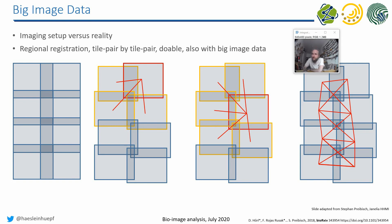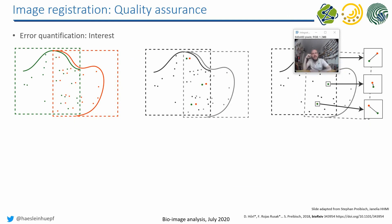At the end, you take all the transformations determined between the different tiles, equalize the error between them, and figure out how all tiles fit together in the best way. When all tiles are aligned, you should still do some error quantification — for example, measuring the average distance between interest points of two different images in overlapping regions, to have some quality estimate from the stitching.